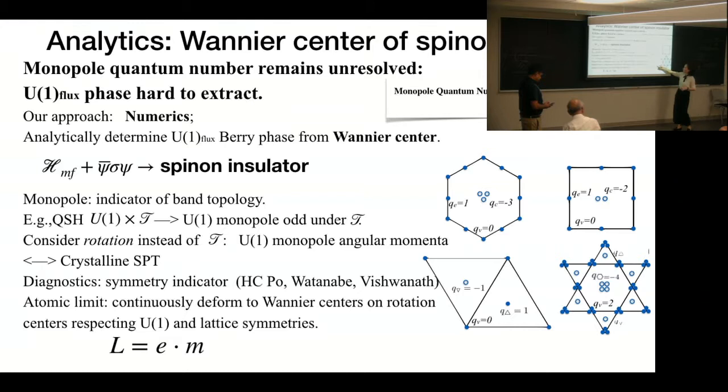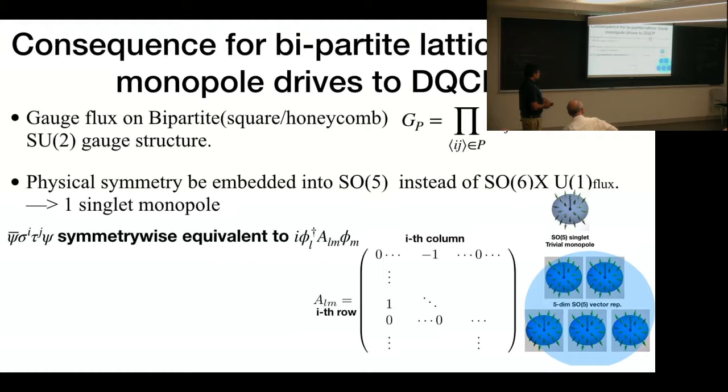Maybe one comment is, for a triangular lattice, if we consider translation symmetry, which is C3 rotation around this site, and C3 inverse around this site—so the monopole actually sees gauge charge 2, which means there will be a 4π/3 and a -4π/3.